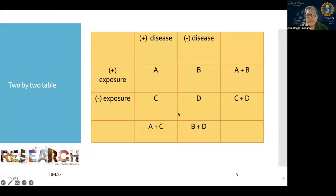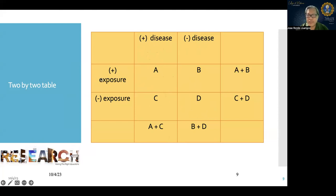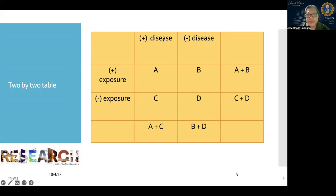For your 2x2 table, the outcome should be in the second and third columns — positive outcome in the second column, negative outcome in the third. The exposure or risk factor should be on the rows — second row for those with exposure, third row for those without. Do not interchange exposure and disease placement. If the table is wrong, your computation and results will not be valid. Always remember: outcome on top, risk factor on the side.